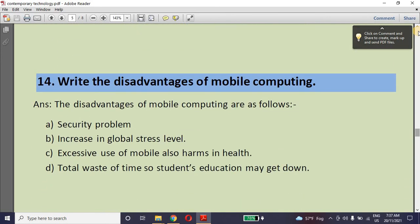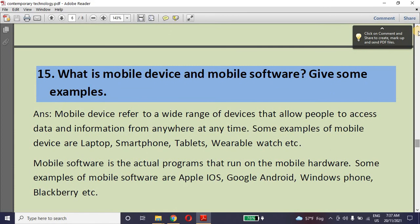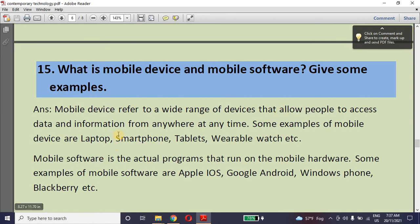Disadvantages, we have few disadvantages also. What is mobile device? Mobile device like laptop, smartphone, tablet, wearable watch. Mobile software means like Apple iOS, this is an operating system, Google Android, Windows Phone, Blackberry. These are the software names. Besides this, we have application software also like Messenger.